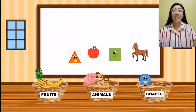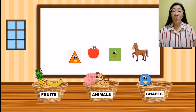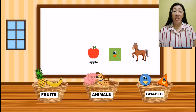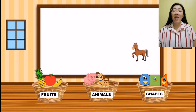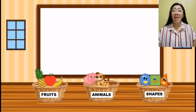Next picture is a triangle, and a triangle is a shape, so we will put the triangle inside the shapes basket. Next picture is an apple, and an apple is a fruit, so we will put the apple inside the fruits basket. Next picture is a square, and a square is a shape, so we will put this one inside the shapes basket. And our last picture is a horse, and the horse is an animal, so we will put the horse inside the animal's basket.